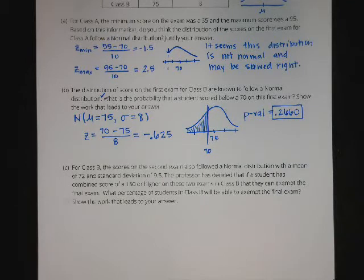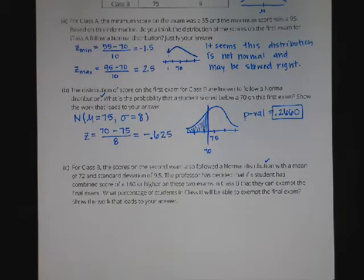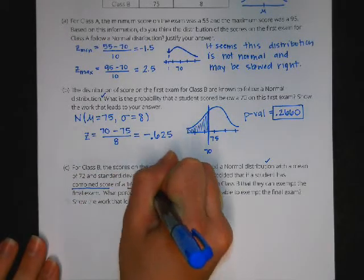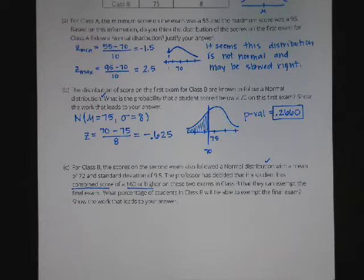In part C, for Class B, the scores on the second exam also follow a normal distribution with a mean of 72 and a standard deviation of 9.5. The professor decided that if a student has a combined score of 160 or higher on the two exams, they can exempt the final. What percentage of students in Class B will be able to exempt the final exam? Show the work that leads to your answer.